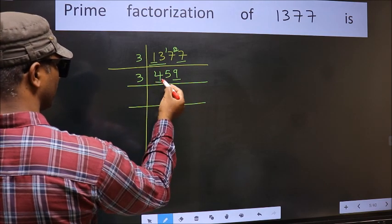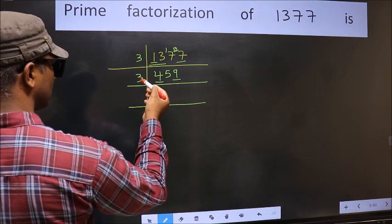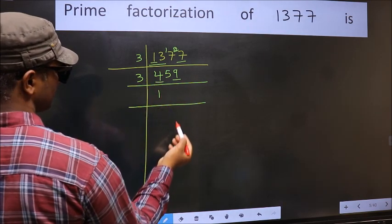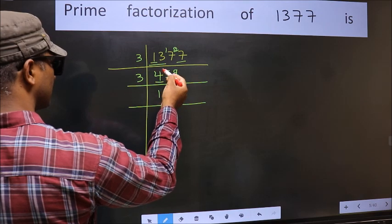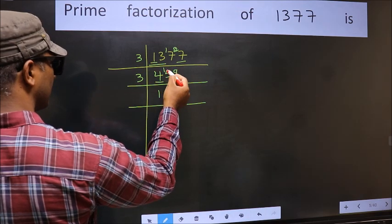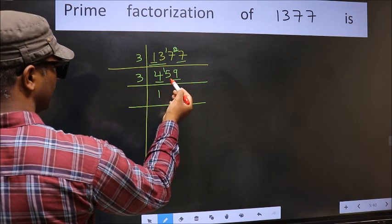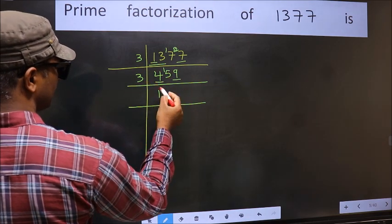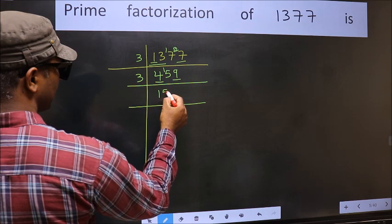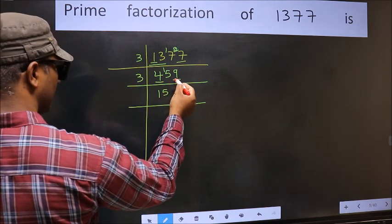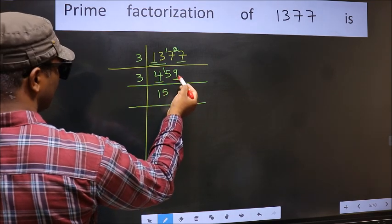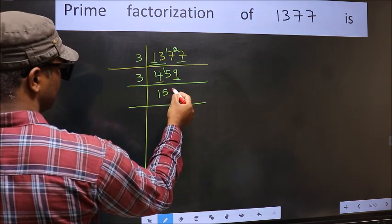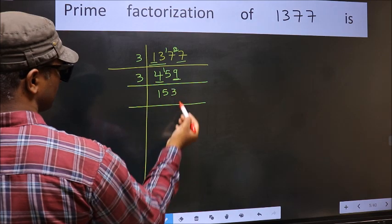First number is 4. A number close to 4 in the 3 table is 3 ones, 3. 4 minus 3 is 1; 1 carried forward gives 15. We get 15 in the 3 table as 3 fives, 15. The other number is 9. We get 9 in the 3 table as 3 threes, 9.